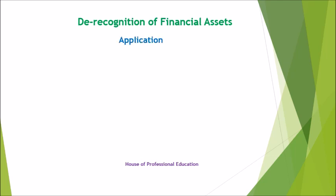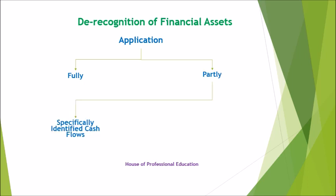De-recognition shall be applied in its entirety or to part of a financial asset if and only if the part being considered meets one of the following conditions. First, specifically identified cash flows — for example, when an entity enters into an interest rate strip whereby the counterparty obtains a right to the interest cash flows but not the principal cash flows from that instrument. Second, a fully proportionate pro-rata share of cash flows — for example, when an entity enters into an arrangement whereby the counterparty obtains a right to a 90% share of all the cash flows of a debt instrument. However, if the arrangement transfers the right to the first or last 90% of cash collections from a financial asset, then de-recognition shall be in its entirety, not partly.